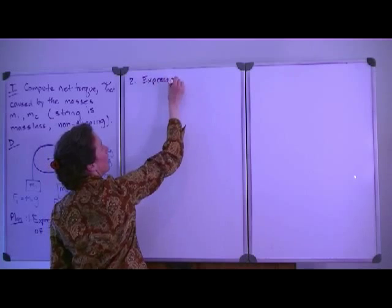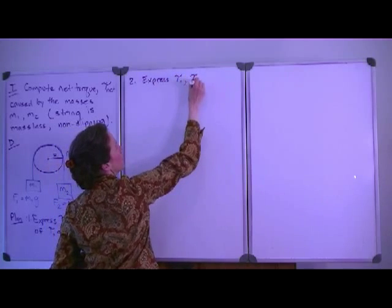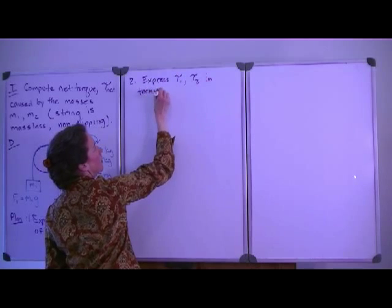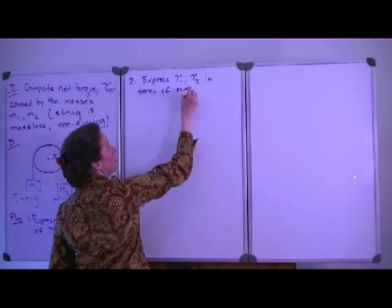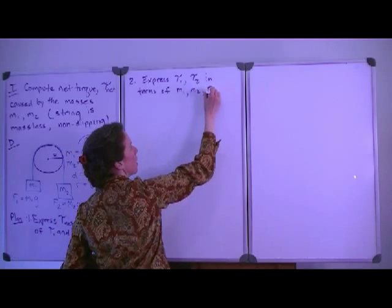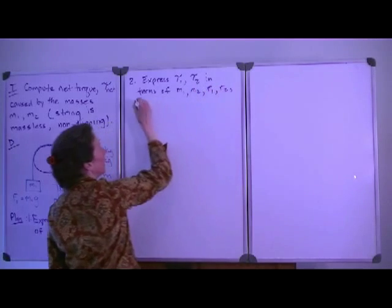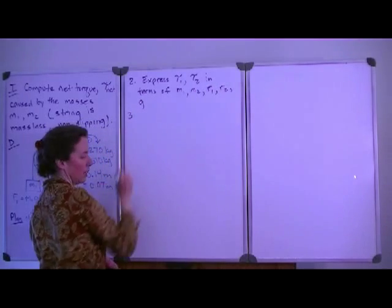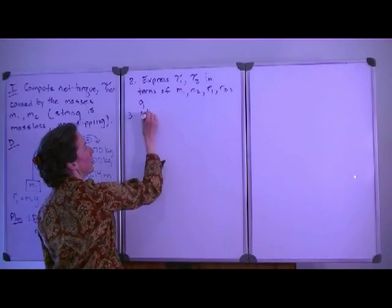So we express tau1 and tau2 in terms of mass 1 and mass 2, and their respective moment arms, r1 and r2, and gravitational acceleration.